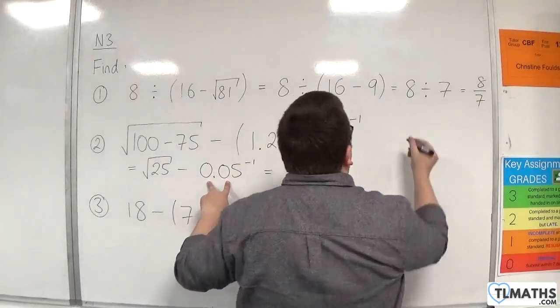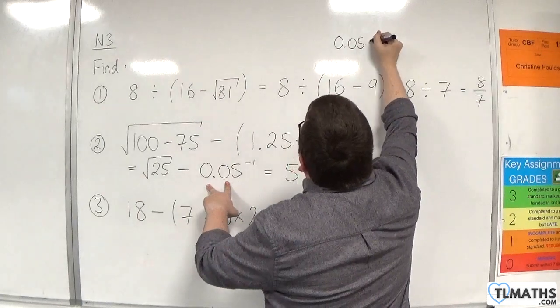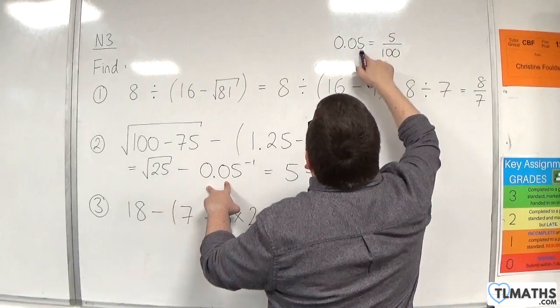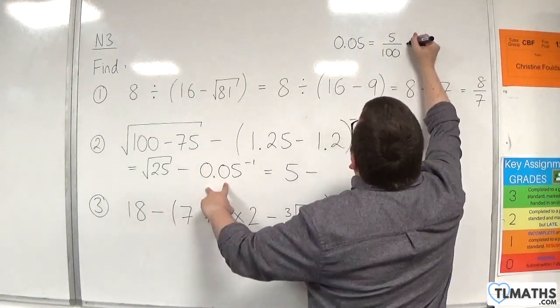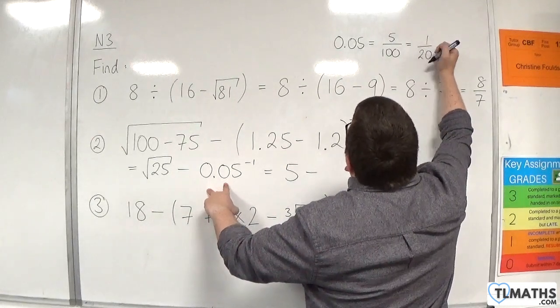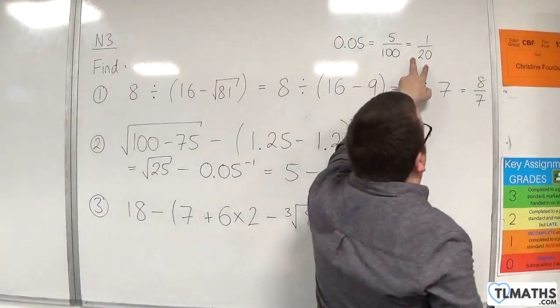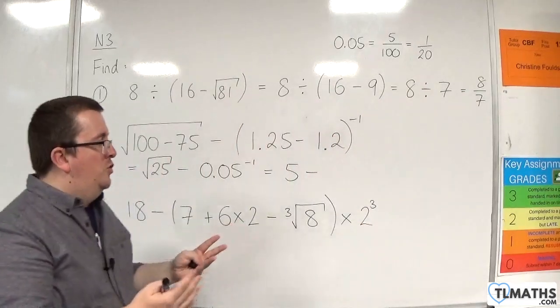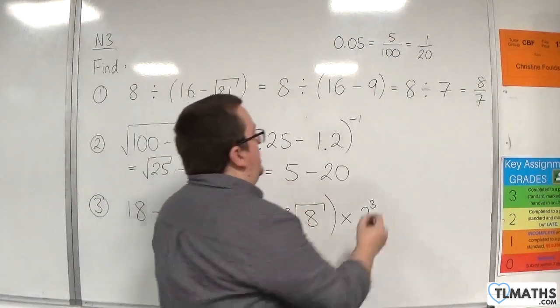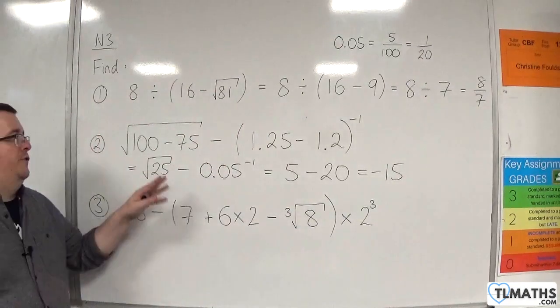What is 0.05 as a fraction? 0.05 is 5 hundredths because it's 5 in the hundredths column. 5 hundredths divided top and bottom by 5 gives you 1 twentieth. So 0.05 is 1 twentieth. If you're trying to find the reciprocal of 1 twentieth, then that would be 20. So we actually have 5 take away 20, which is minus 15. And that is the result for number 2.